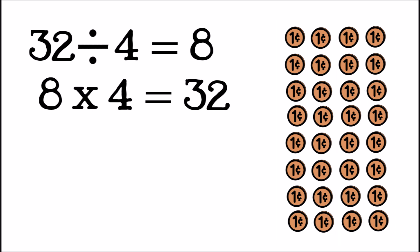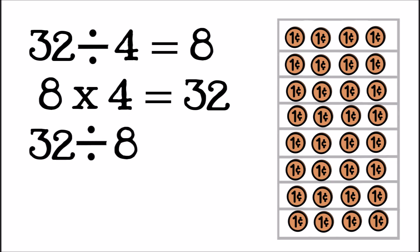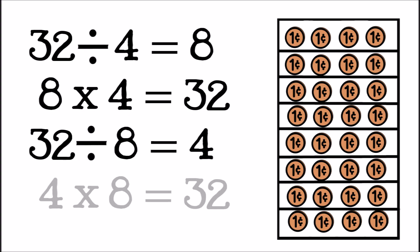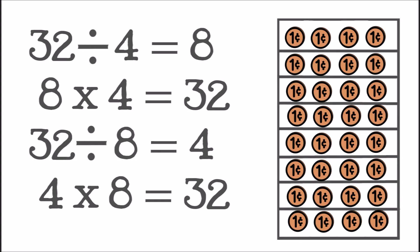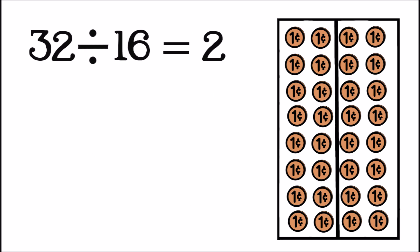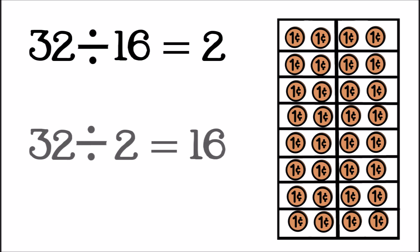How else could we divide thirty-two? Because thirty-two divided by four equals eight, we know that we could divide thirty-two by eight. Thirty-two divided by eight equals four. We could also divide thirty-two into two equal groups of sixteen, or into sixteen groups of two, and those facts are related as well.